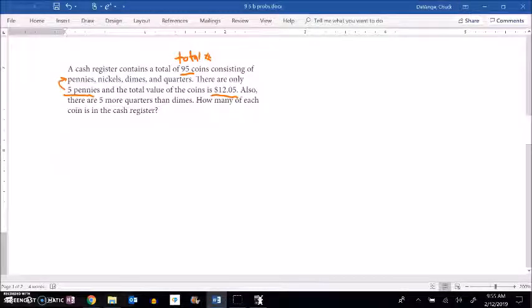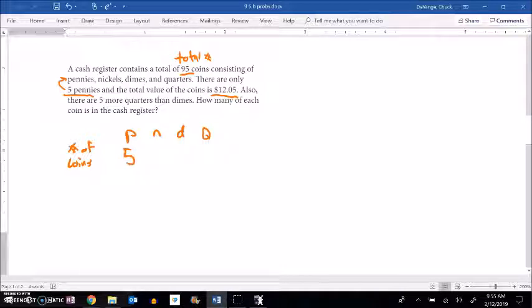We know that we have pennies, nickels, dimes, and quarters. So number of coins. Well, fortunately, they told us there's 5 pennies. We don't know the number of nickels, dimes, or quarters, but we do know that there's a total of 95 coins.